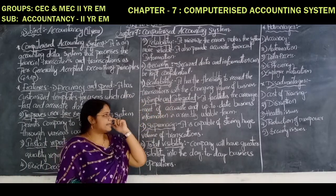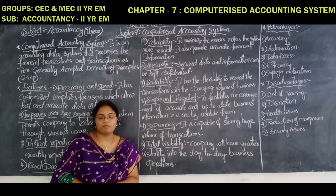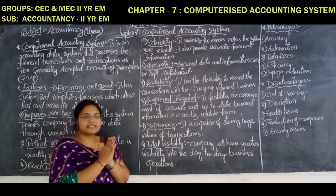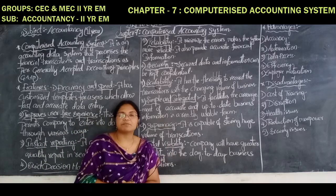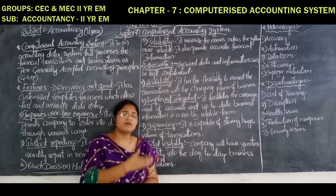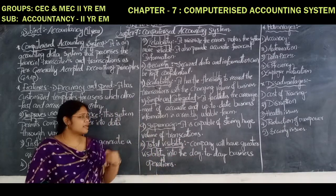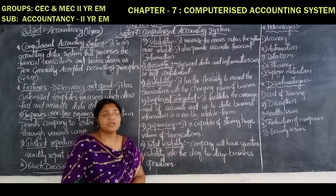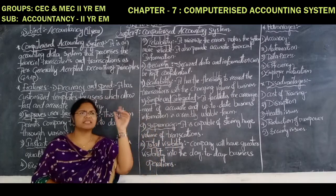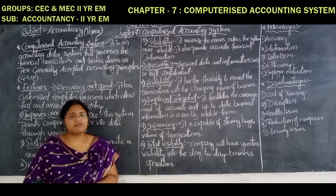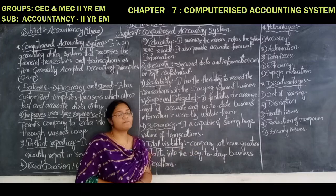Simple and integrated: it facilitates the arrangement of accurate and up-to-date business information in a readily usable form. It will provide whatever information is necessary for the business organization. The accounting information will be completely ready for the business organization. Whenever they want that information, they can take the soft copies from the computer system and present it to anyone who wants it. Every year, whatever the final report they get, they can save that report as one document or save it in a pen drive. So there will be a type of integration in the computerized accounting system.